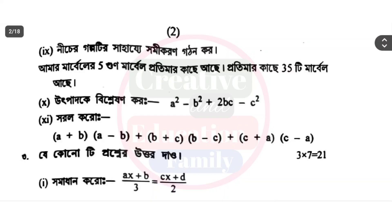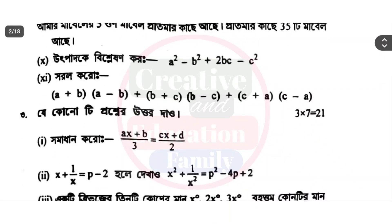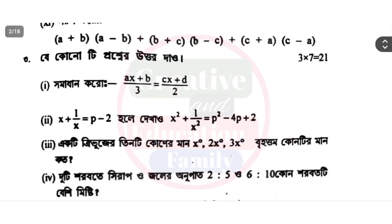There are some marbles shown here. Each person has marbles; each person has 33 marbles. Factorize: a square minus b square plus 2bc minus c square. Short form: a plus b into minus b plus b plus c into b minus c plus c plus a into c minus a.